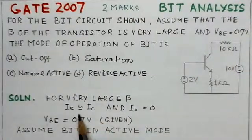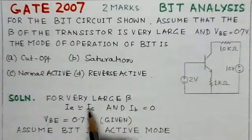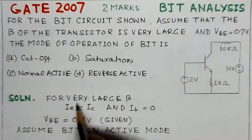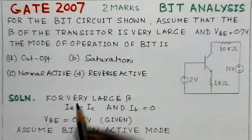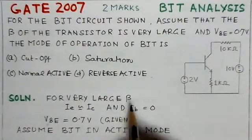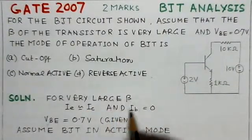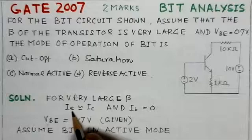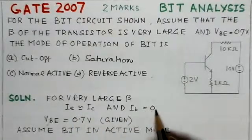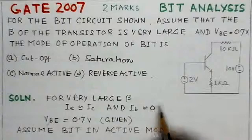It's being assumed that the beta of the transistor is very large. For a very large beta, the emitter current is nearly equal to collector current, and the base current is nearly zero.